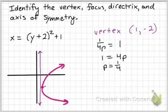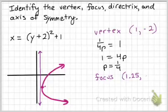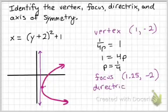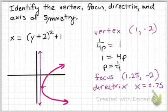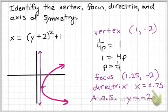Now let's decide what the coordinates of those are. My focus I can see is at 1.25, negative 2. And my directrix, it's a vertical line, so it's x equals 0.75. So, it's starting at 1, but I move to the left by 1 quarter. The last thing I need is my axis of symmetry, which I can see is a horizontal line through my vertex. Horizontal lines are y equals, so this one's at y equals negative 2. And that's it.